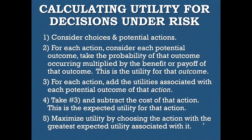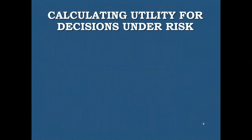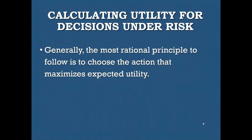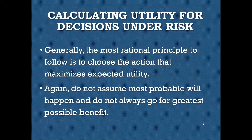Let's make sure we're clear on how this works. When calculating utility for decisions under risk, the most rational principle is to choose the action that maximizes the expected utility — that's why you're making these calculations. You want to maximize utility, the best possible outcome. And again, we keep in mind our general principles: you don't assume that the most probable thing will happen, and you don't always go for the greatest possible benefit.